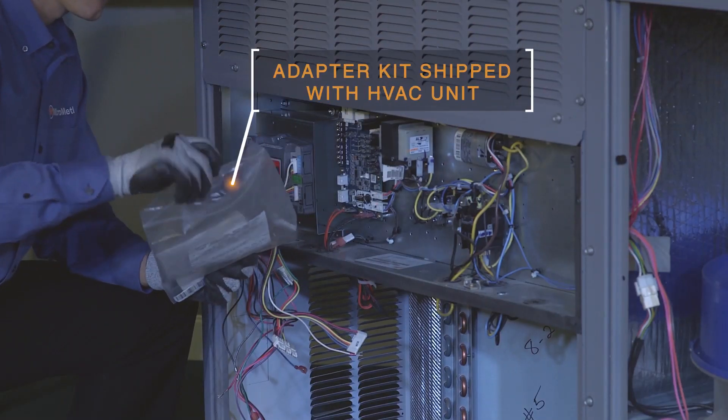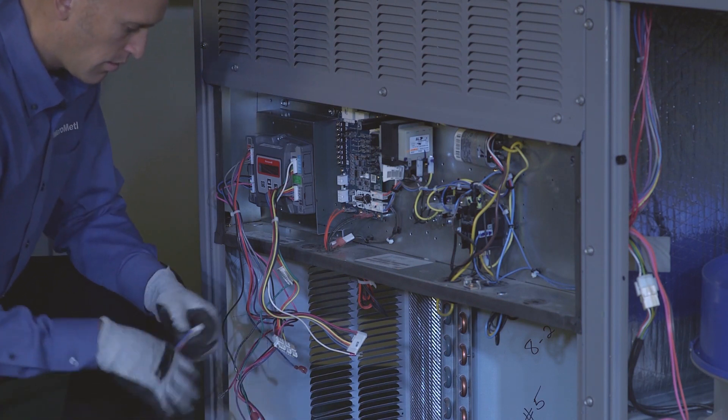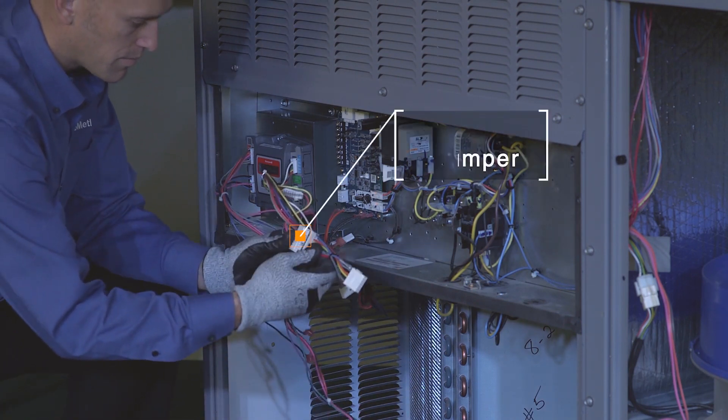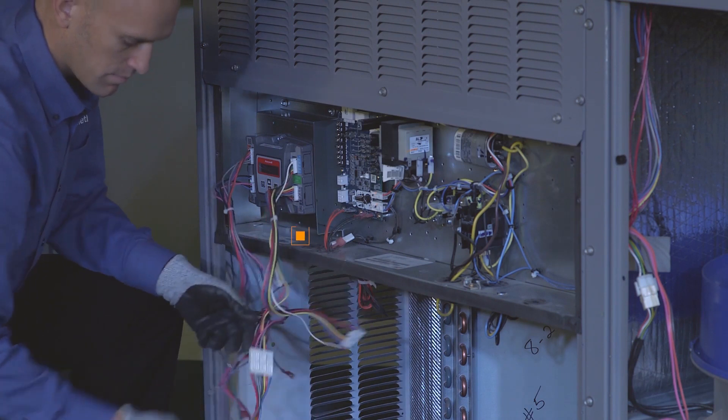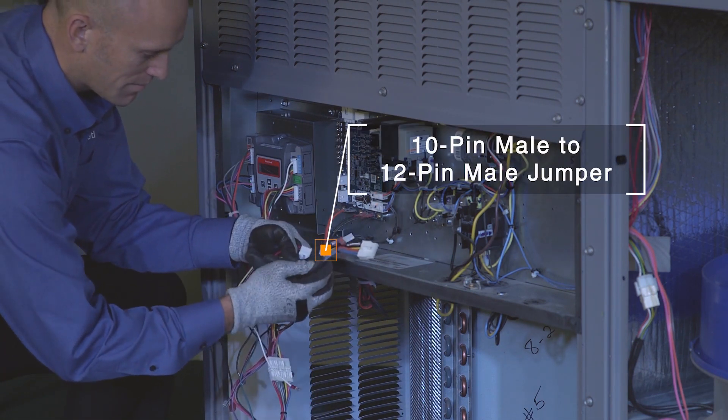Using the adapter kit that is shipped with the unit, connect the jumper plugs to the 10-pin harness connected to the W7220. Ensure the wire colors on the mated plugs are aligned.